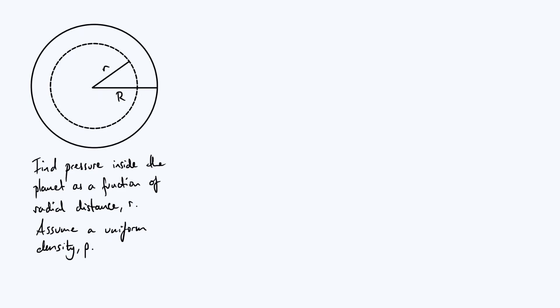We're going to say that the planet has a radius of capital R, and we're going to assume that it has a uniform density ρ. Now the assumption of uniform density is of course not quite correct for a planet like the Earth, which has this layered structure.